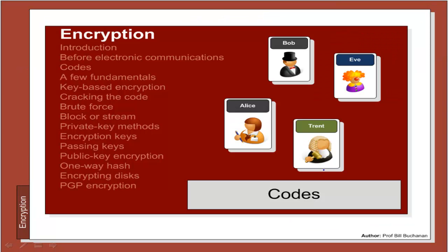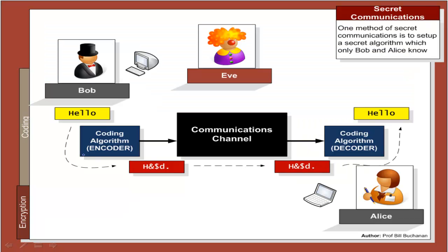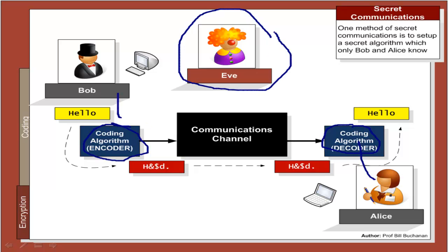What were some of the codes used to keep messages secret? One method is to use an encoder on one side and a decoder on the other side. It is then up to Alice and Bob to define these encoder and decoder and keep them secret. As long as Eve doesn't know what the algorithm is, Bob can encode his message in a secret form — we typically call this cipher text — and pass it so that Alice knows how to decode it.